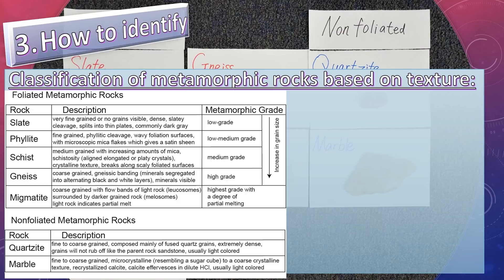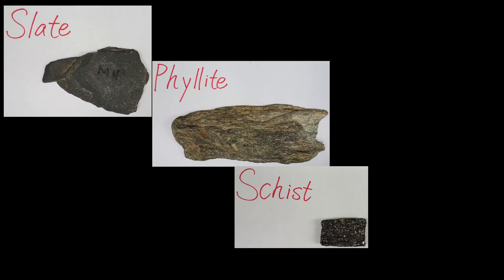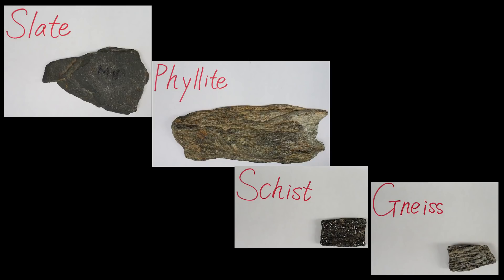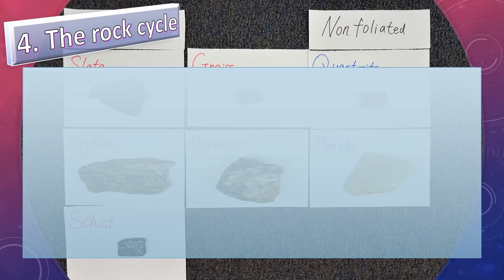For foliated rocks with increasing metamorphic grade, the grain size is also increasing. Here is the progression from slate, to phyllite, to schist, to gneiss — increasing metamorphic grade with increasing grain size.